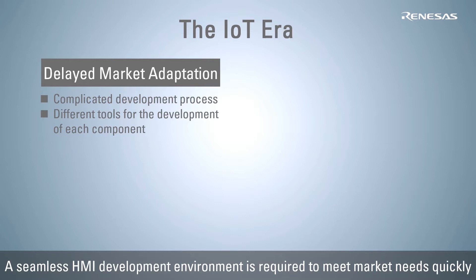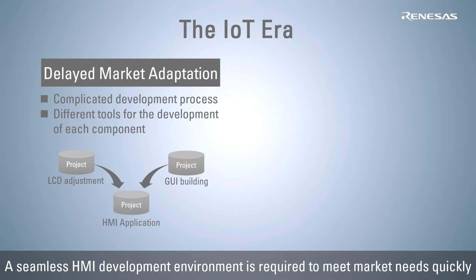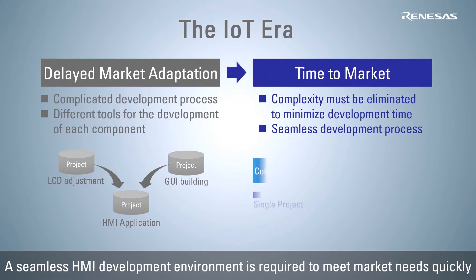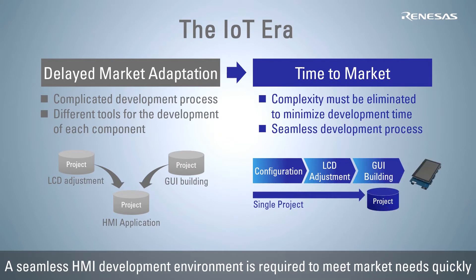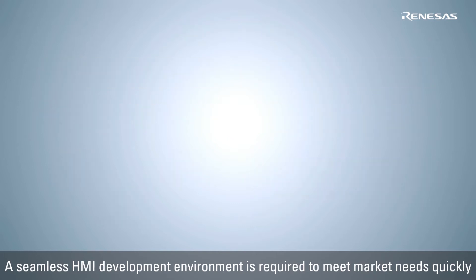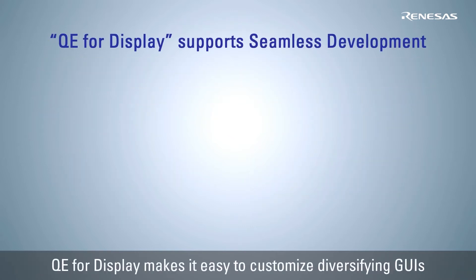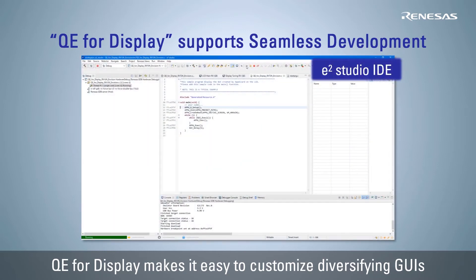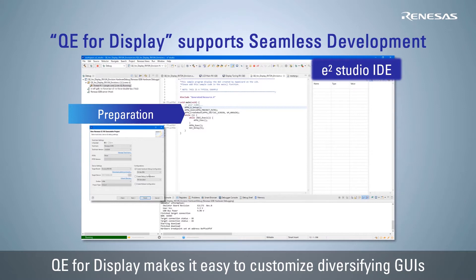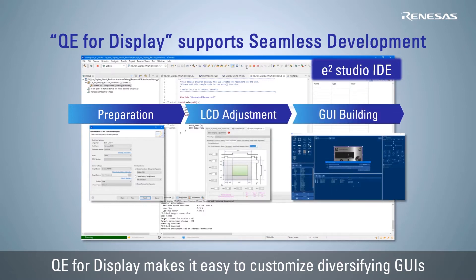When developing HMI using a graphical user interface, the complicated development process of integrating projects individually developed for LCD adjustment and GUI into the actual application is a factor in delaying market adaptation. To achieve a quick time-to-market, a seamless development environment is required to reduce development time. QE for Display from Renesas is the plug-in for e² Studio IDE for display applications. Along with display control, it also integrates the GUI drawing tool M-Win, which enables seamless LCD adjustment and GUI creation, making it easy to customize diverse GUIs.